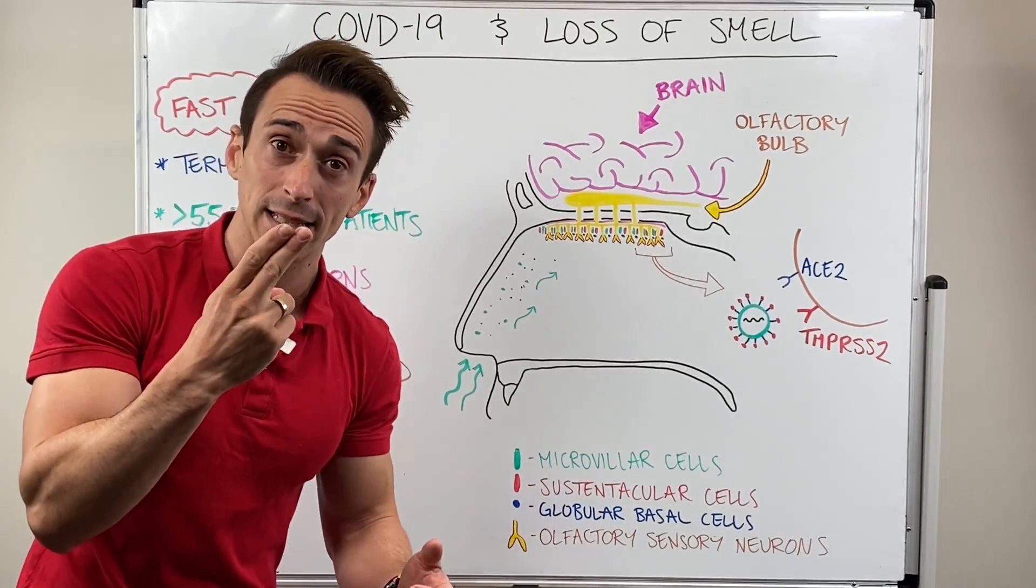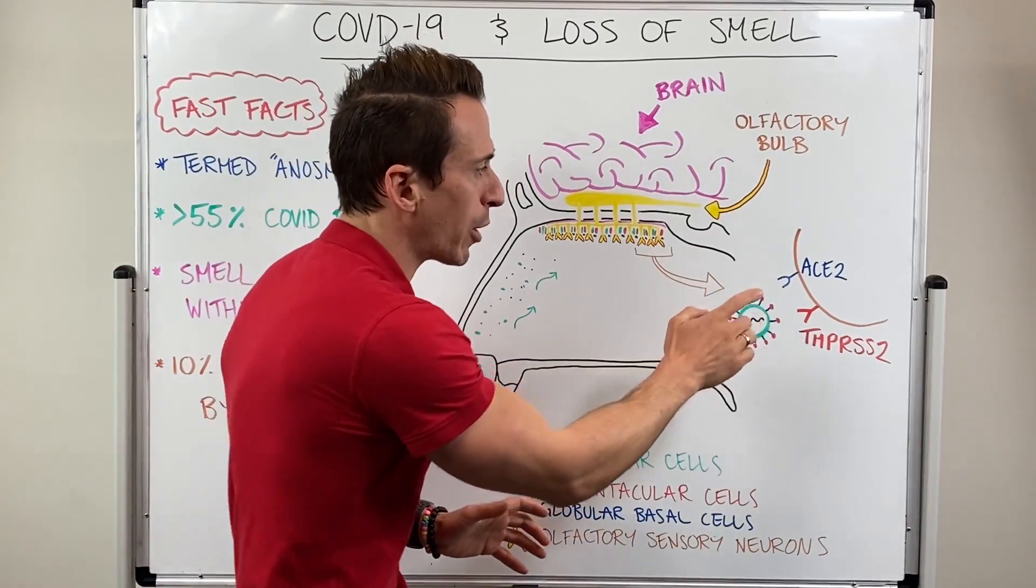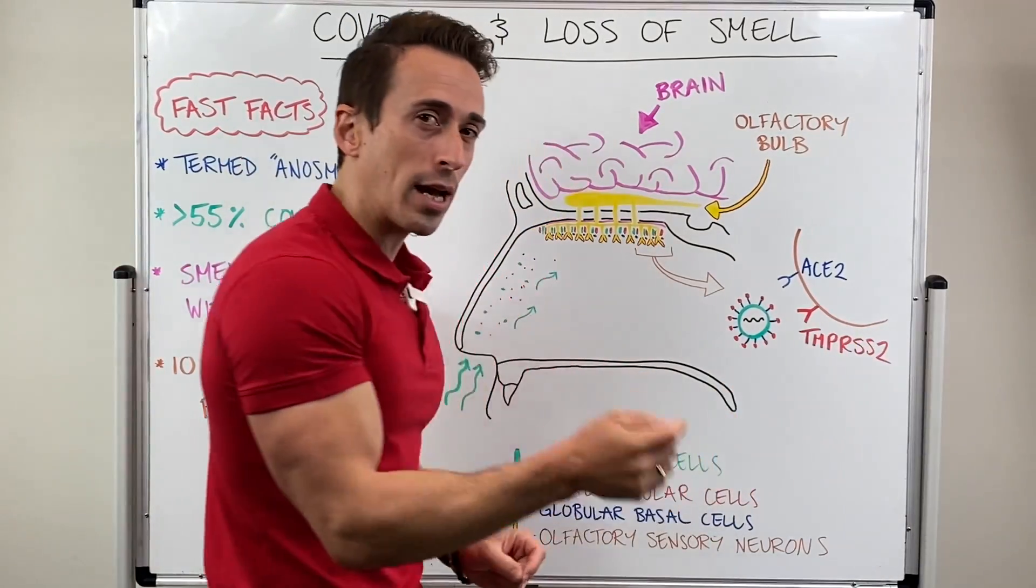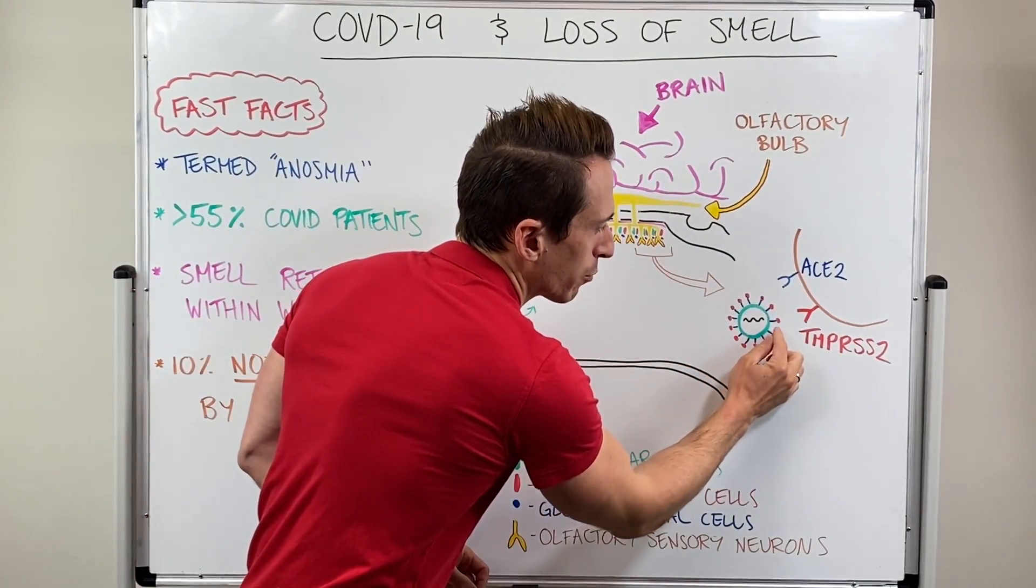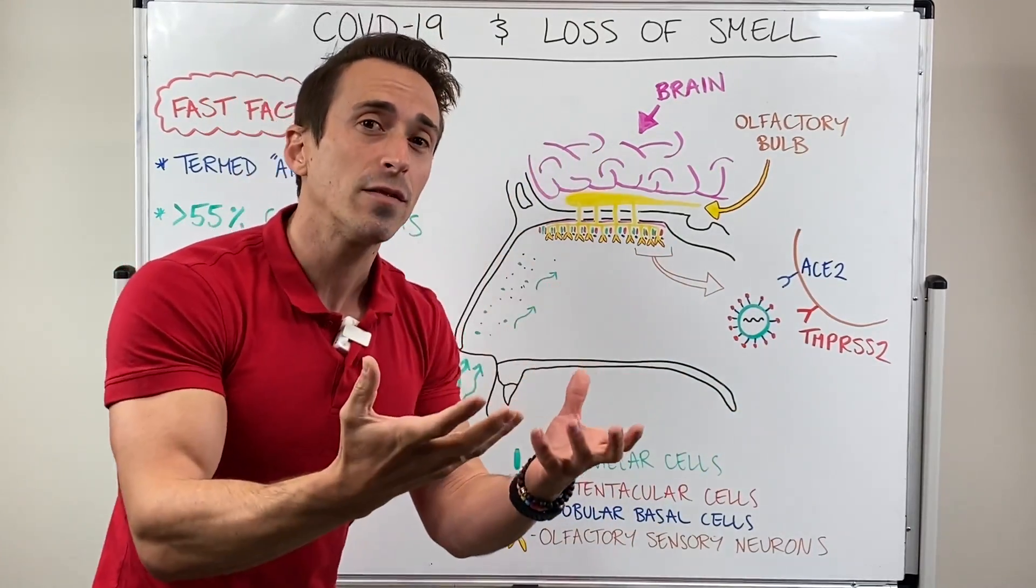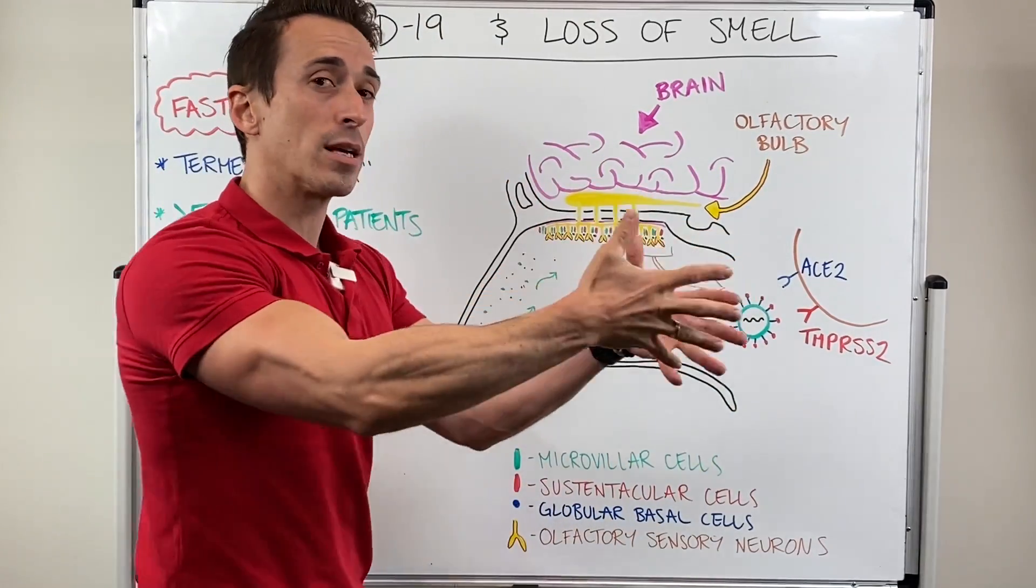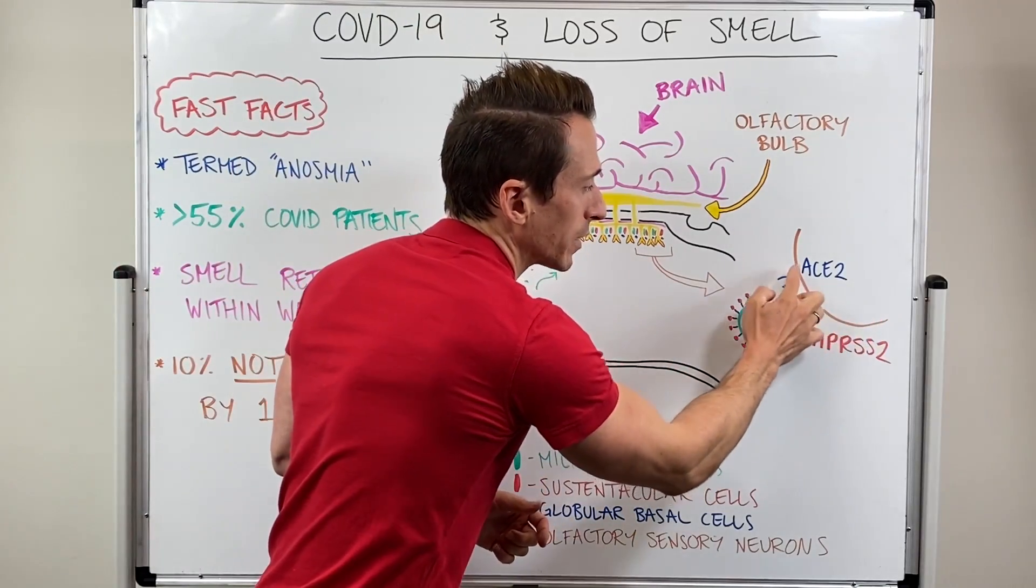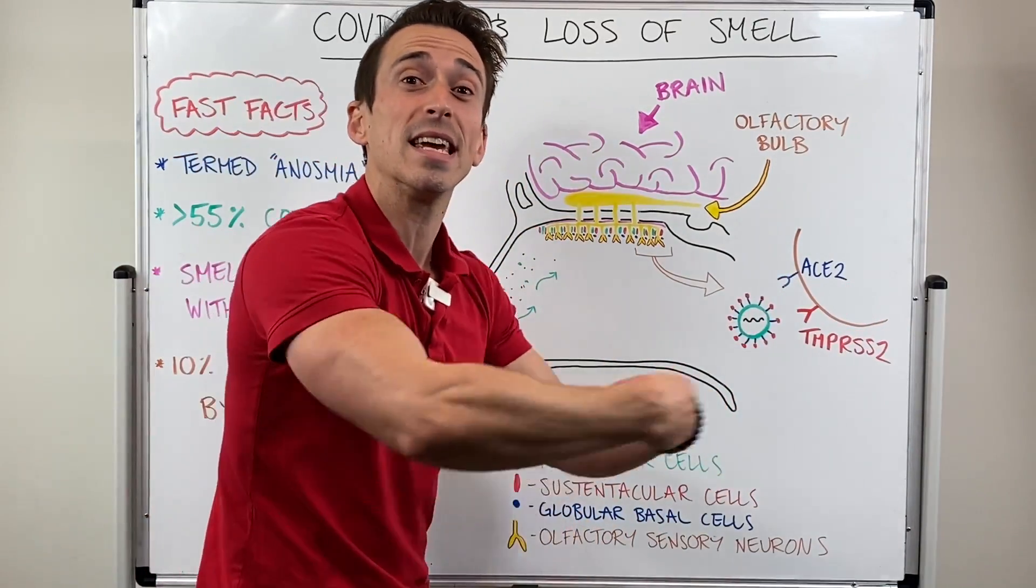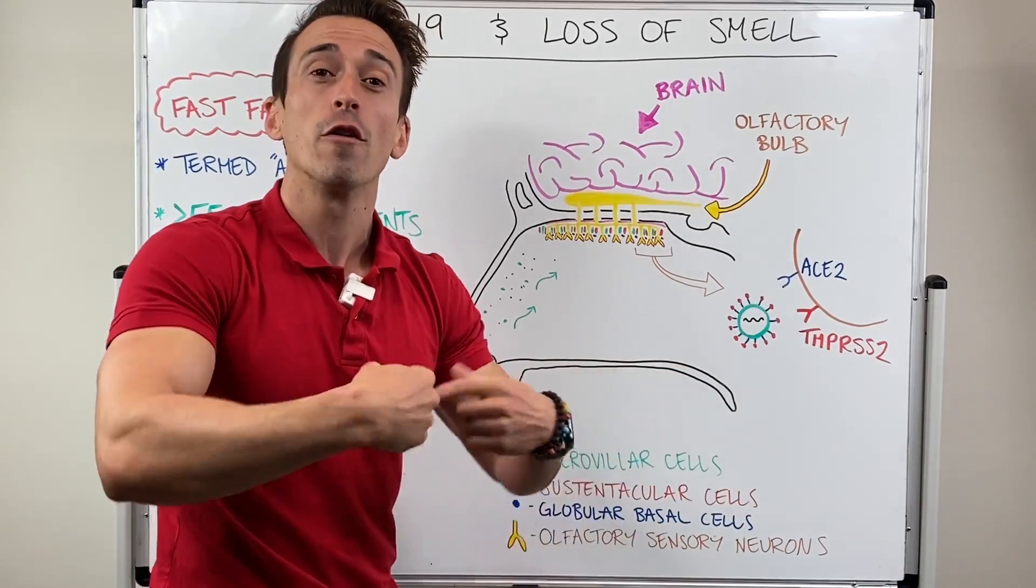Basically, they're scissors that chop proteins. The virus must bind to ACE2 receptors, and this serine protease needs to chop some of the proteins on the outside surface of the virus. That then activates the proteins to be able to embed themselves into the membrane of the cell, and it can release its DNA inside the cell itself for replication.